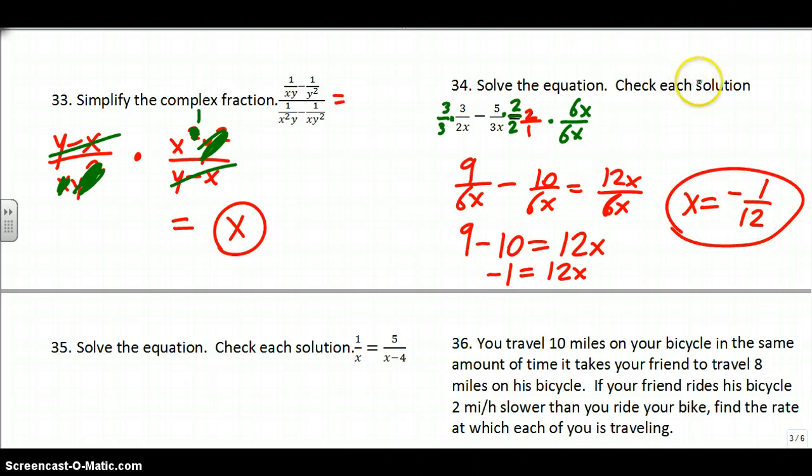When you divide by 12, x ends up equaling negative 1 twelfth. Now let's check each solution. The only thing you have to worry about is making sure whatever x comes out to be, it's not in your restrictions. The only restrictions here are 0. x cannot be 0. And that's not our answer, so we're good.